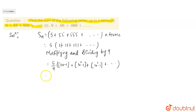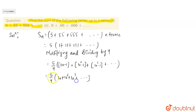Now here we club 10, 10 squared, 10 cubed together. We get 10 plus 10 squared plus 10 cubed up till N terms. Minus 1 plus 1 plus 1 up till N terms again.